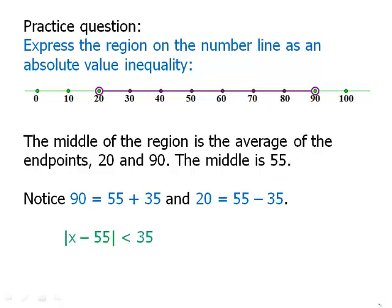So in other words, the distance from 55 is less than 35. And that is the absolute value inequality that exactly expresses that particular region.